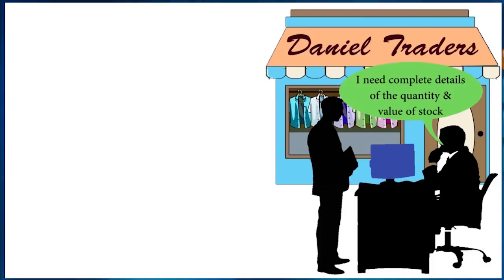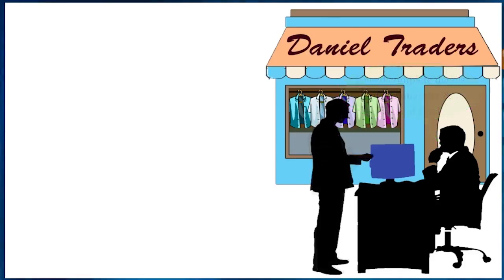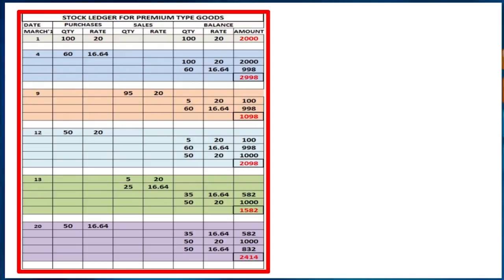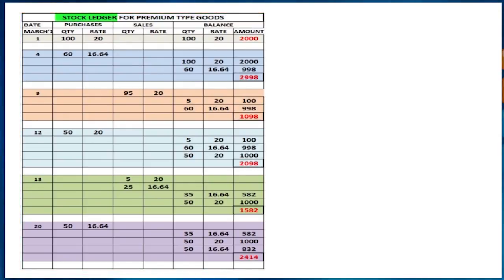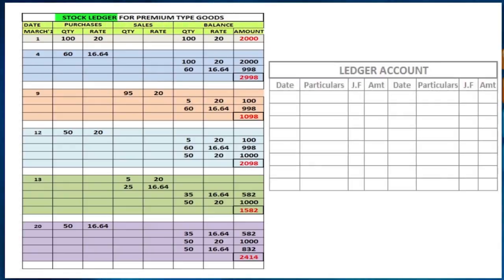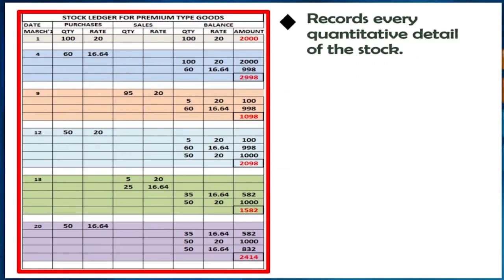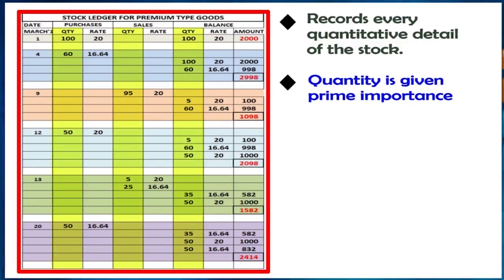He called us and asked how he would find the complete details about the quantity and value of stock, so we handed over the stock records to him. The stock or inventory record contains the stock ledger account. Though it is called a ledger account, it has a very different format — it records every quantitative detail of the stock: how many goods were purchased at what price, how many goods were sold at what price, and the balance quantity. In this ledger, quantity is given prime importance.